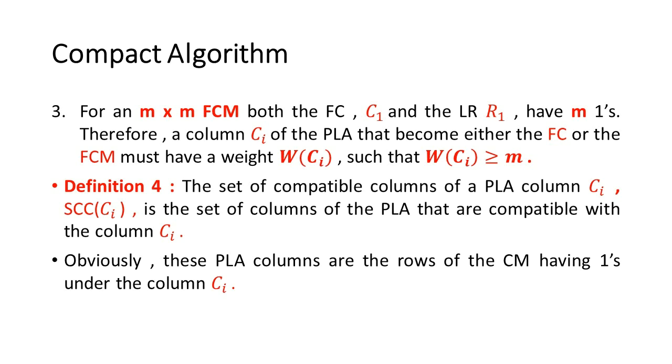For an m × m FCM, both the FC C1 and the LR R1 have m ones. Therefore, a column C_i of the PLA that becomes either the FC or the FCM must have a weight W(C_i) such that W(C_i) ≥ m.